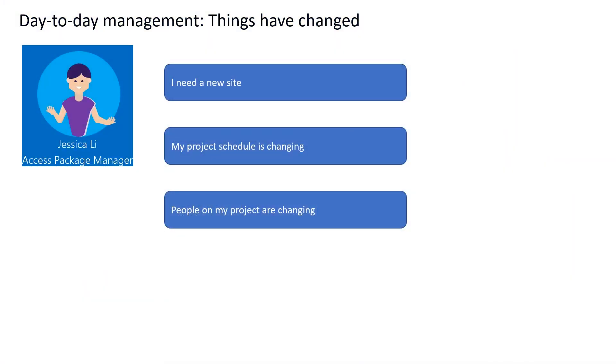Work on the marketing campaign is going quite well. However, now we have a lot of content from months ago that we don't actively use. To make it easy, I need a new site for my project. With access packages, you can change the resources and the resource roles that your team is using for the project.